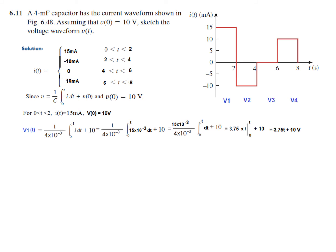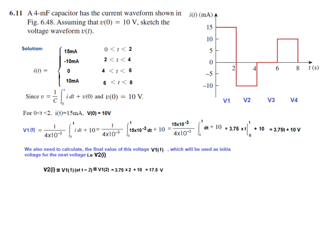Now for V2, we first need the final value of V1, which becomes the initial voltage for V2. From the equation V1(T) = 3.75T + 10, putting T = 2 gives 17.5 volts. So the initial voltage for V2 is 17.5 V.